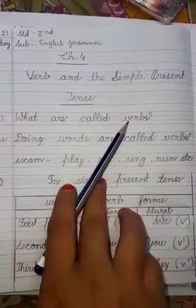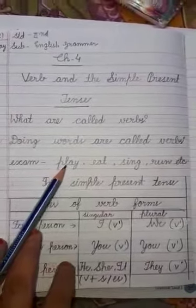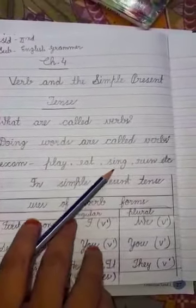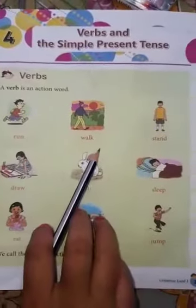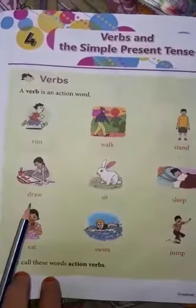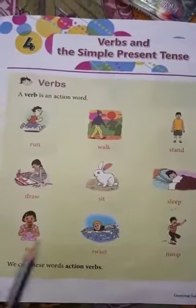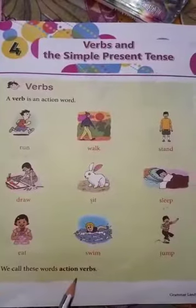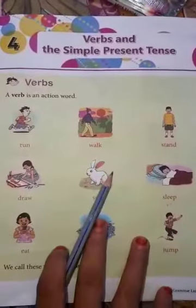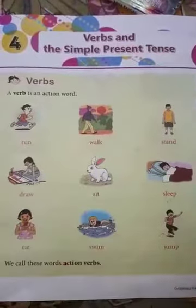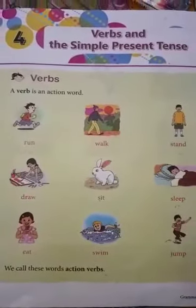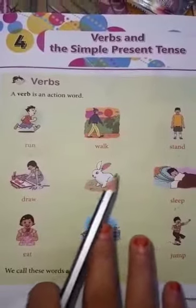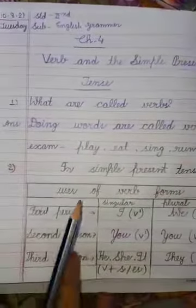For example: play, eat, sing, run, walk, stand, draw, sit, sleep, eat, swim, jump — we call these words action words because in these, kuch na kuch kaam ho raha hai. Run, walk — yeh sab doing words or action words hain. So doing words or action words are called verbs.